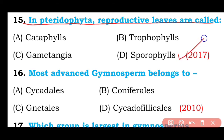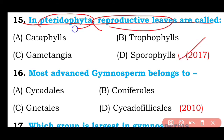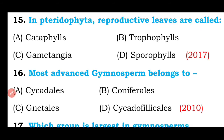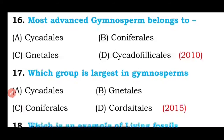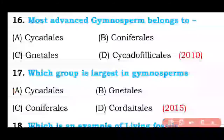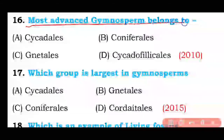Question number fifteen: In Pteridophyta, reproductive leaves are called cataphylls, trophophylls, gametangia, or sporophylls? The correct answer is option D — sporophylls are the reproductive leaves of pteridophytes.